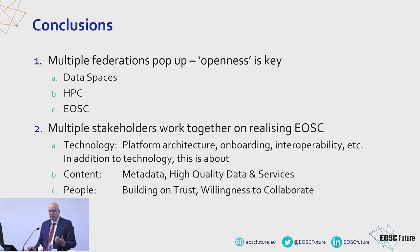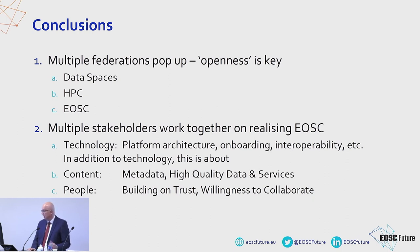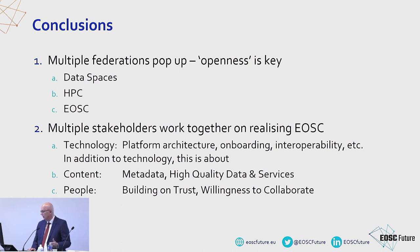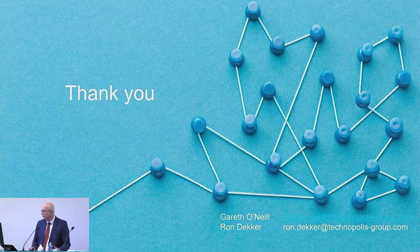My conclusions: I see multiple federations emerging, and here openness is key — we can see it in data spaces, high-performance computing, and in EOSC itself. Multiple stakeholders are working together on realizing EOSC — not only on technology, but also on content, on metadata, and making metadata schemas comparable. High quality of data is essential; otherwise, it's useless. We have to connect the researchers, and that means building on trust and the willingness to collaborate. As we saw this morning with the example of the University of Strasbourg, we already have an excellent example of how you can realize critical mass. Thank you.